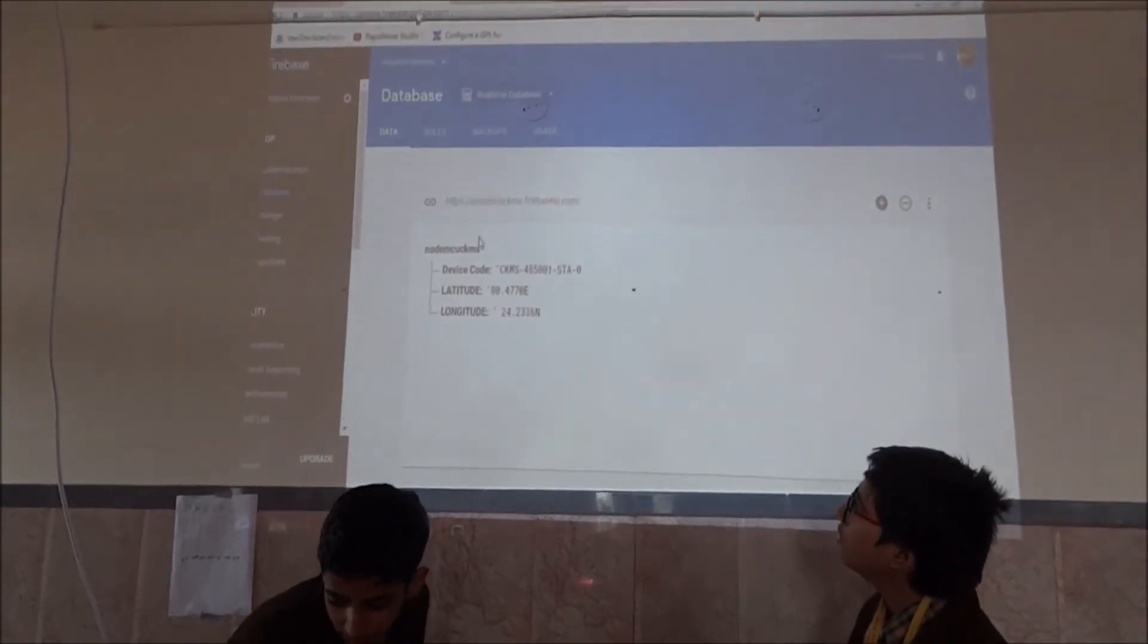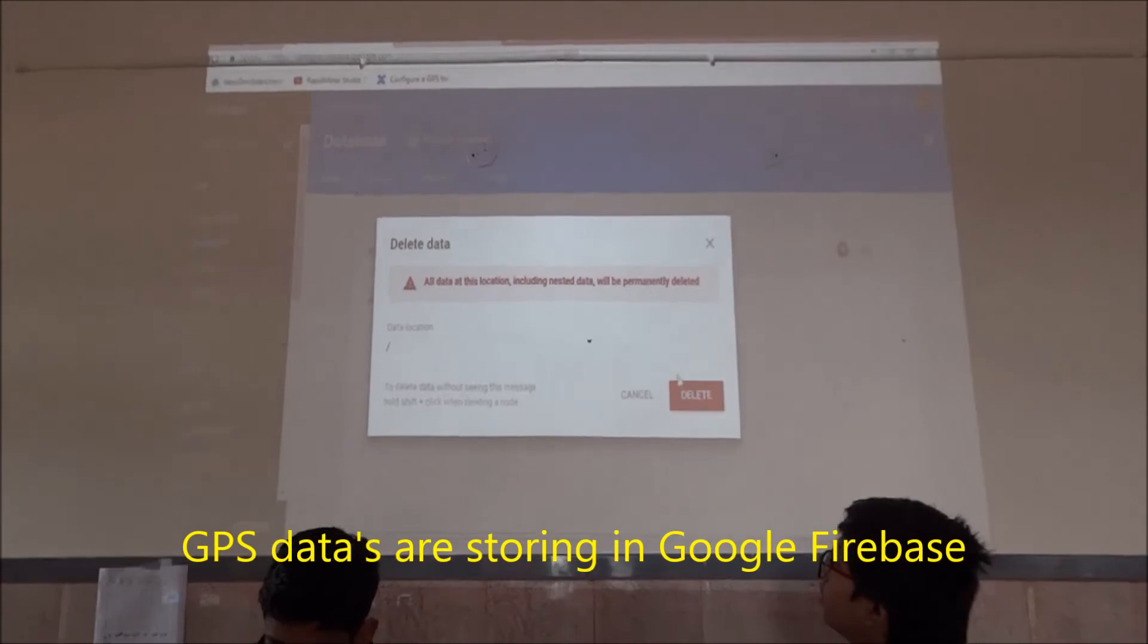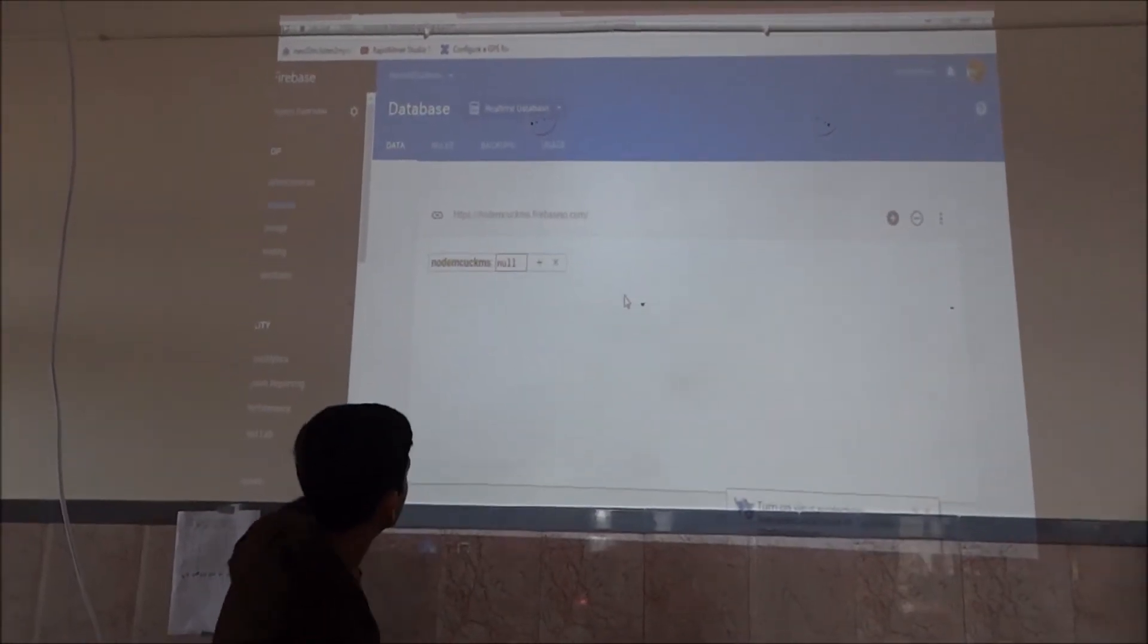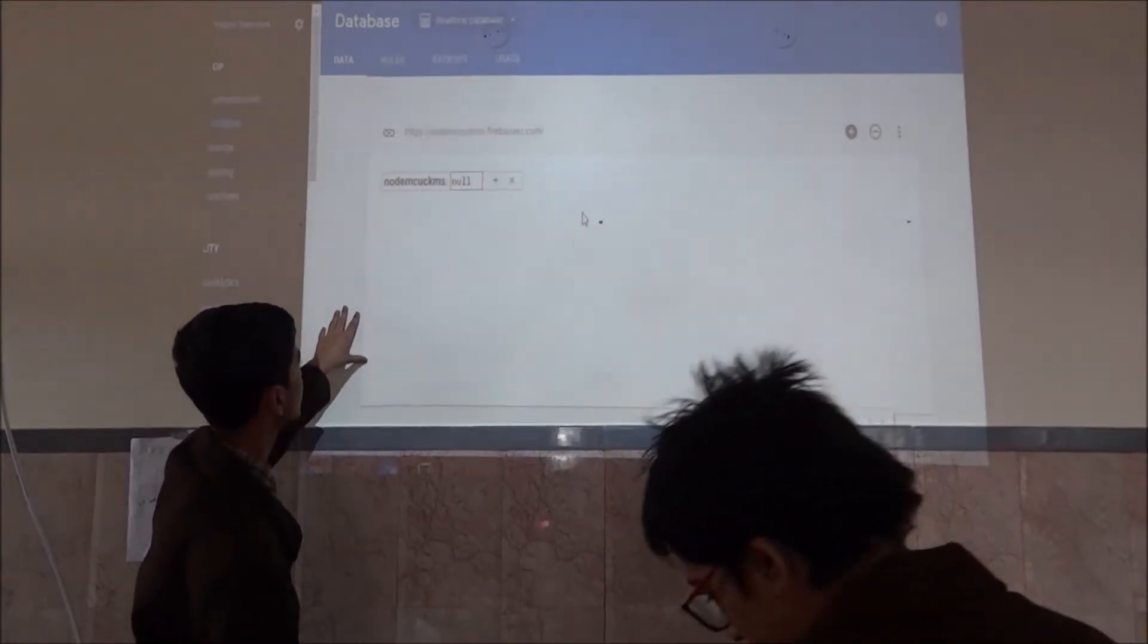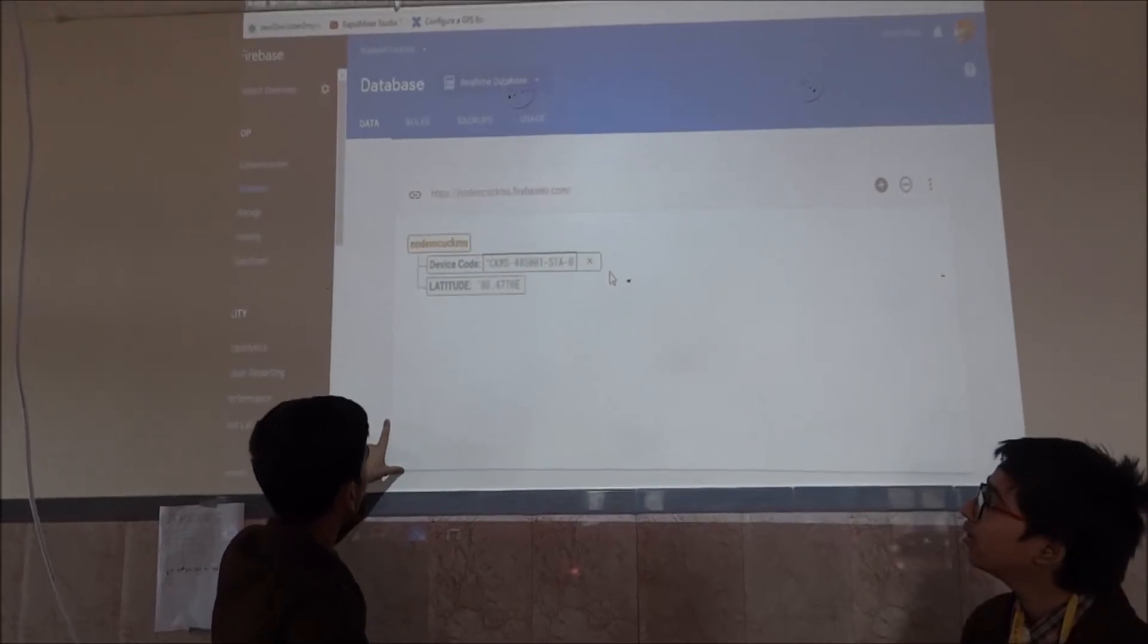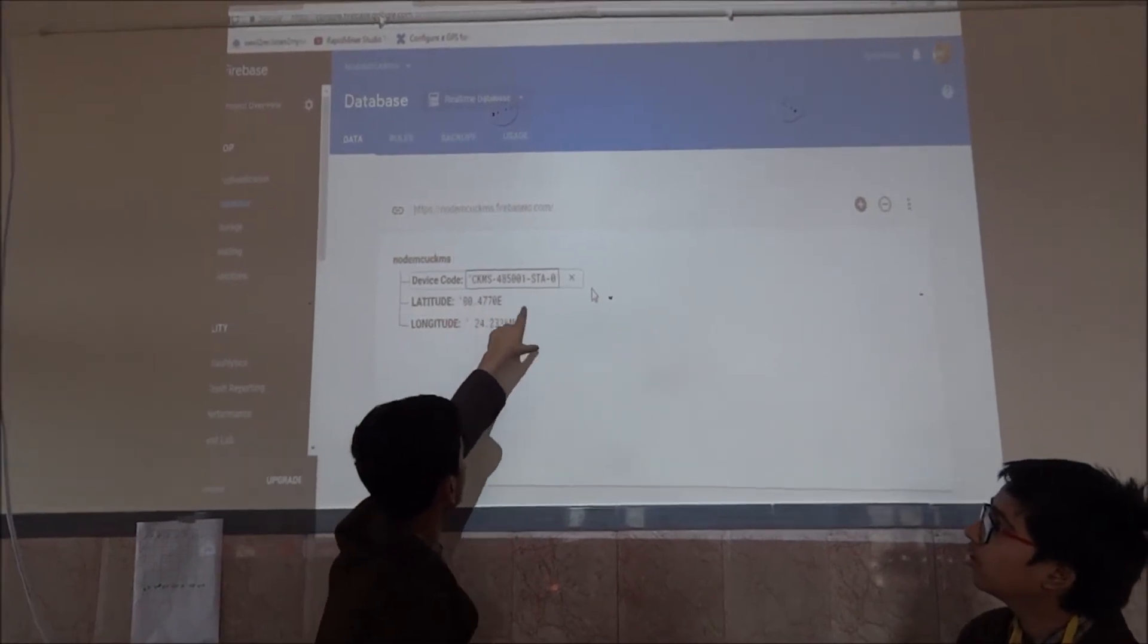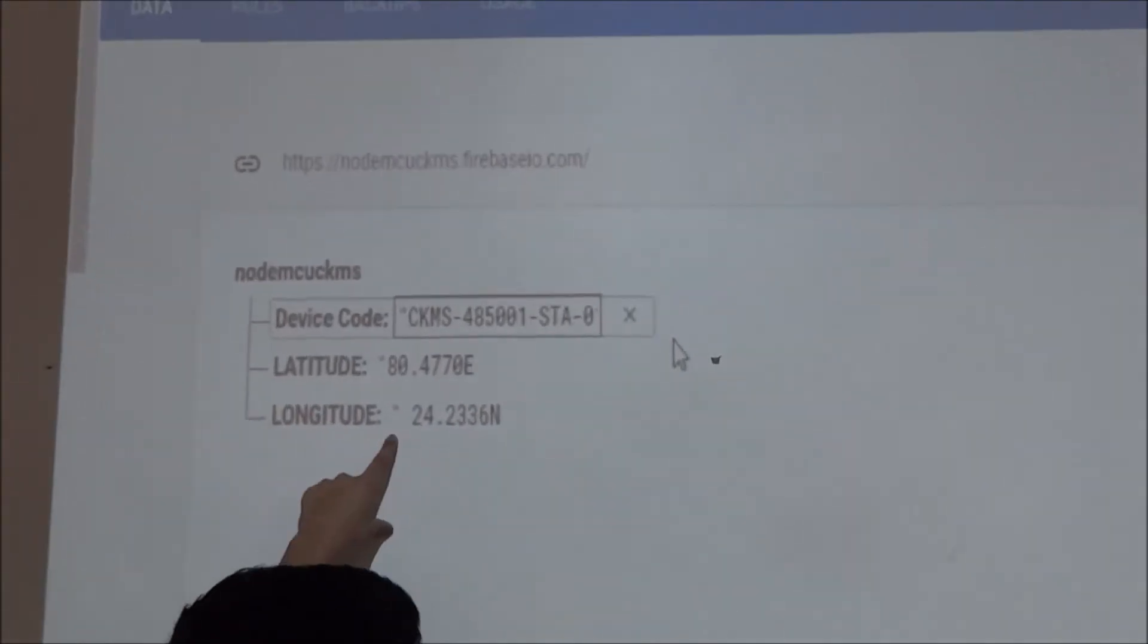Now, the latitude and longitude extent. There you can see I have deleted all the data which we got earlier. So, we are getting the latitude and longitude and the unique ID in this Firebase console. So, we are sending the information and we are waiting for the update. Here you can see that we have got the default data. That is our unique device code, latitude and longitude.